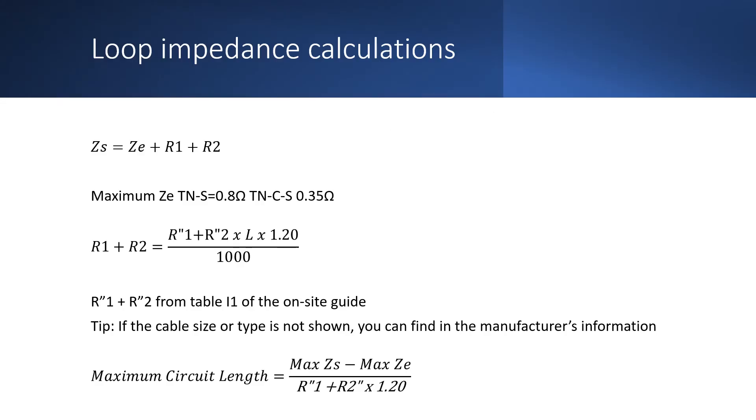So you'll be familiar with the way that we calculate ZS by adding the value for ZE plus R1 plus R2. But what do we do when we don't know what the ZE is?